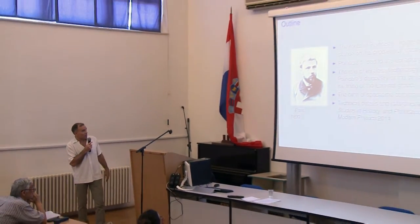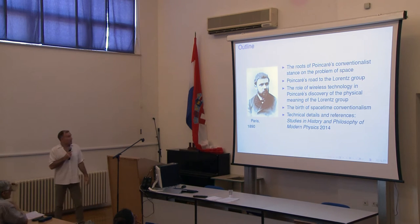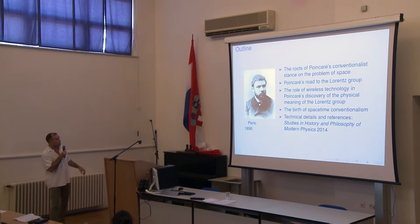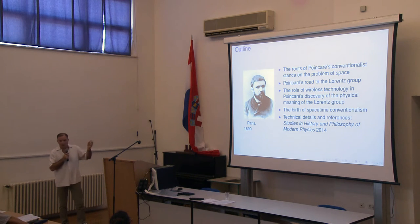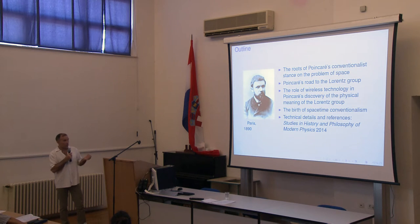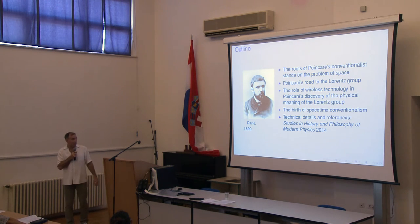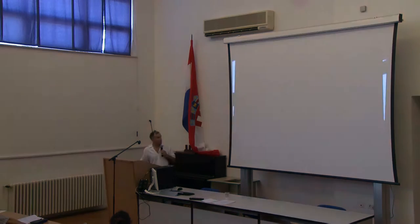So here we have a quick outline. I'm going to talk about the roots of Poincaré's conventionalist stance on the problem of space, a well-known problem of the latter half of the 19th century. Then I'll talk briefly about how Poincaré discovered the Lorentz Group — or what we call today the Poincaré Group, a larger group than the Lorentz Group. Then I come to the heart of the matter: the role of wireless technology in Poincaré's discovery of the physical meaning of the Lorentz Group, and how this led to his further invention of what I call space-time conventionalism. Technical details and references can be found in a publication from last year in the Studies in History and Philosophy of Modern Physics, available on my home page at the University of Lorenz.